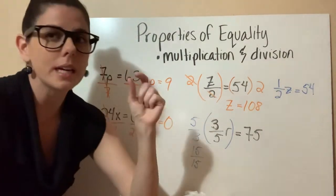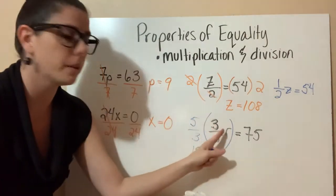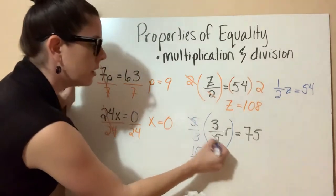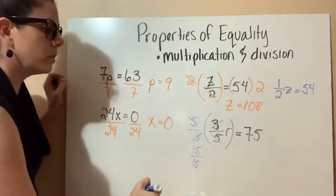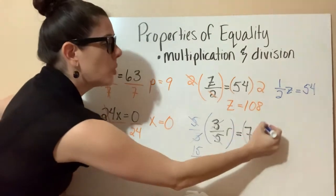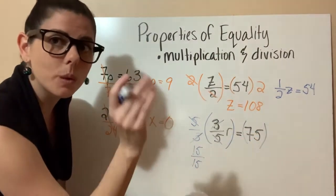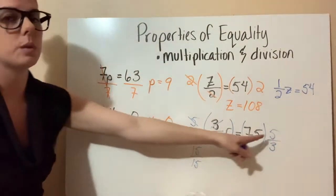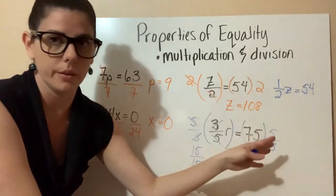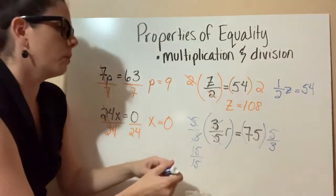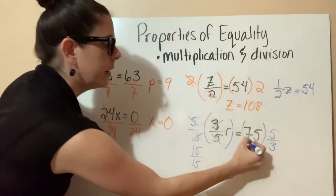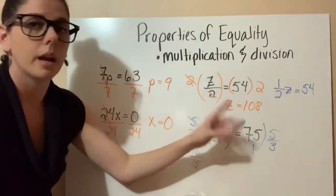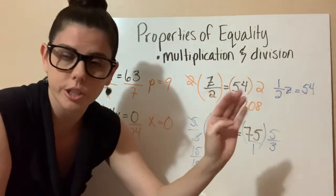Anytime you see a fraction being multiplied by a variable, just take the reciprocal of the coefficient. The 5s cancel with each other and the 3s cancel with each other. But what we do to one side, we have to do to the other — so we multiplied by 5/3 on the left, which means we multiply by 5/3 on the right as well. When dealing with fractions, just remember you can turn the whole number into a fraction by putting a 1 underneath it.